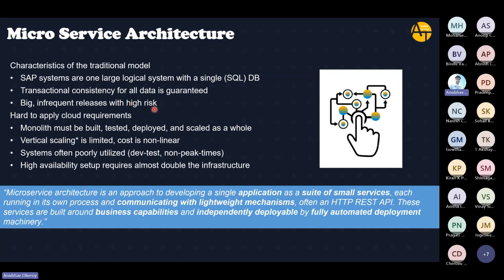How should a cloud system look? What are the characteristics of a cloud system? Traditional ERP systems are hard to apply cloud requirements to — you cannot achieve cloud requirements with them. They are also known as monolithic architecture. A monolithic system must be built, tested, deployed, and scaled as a whole.